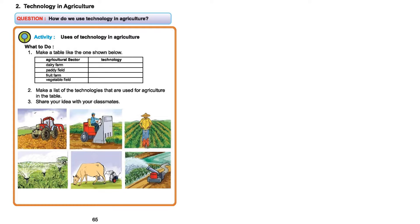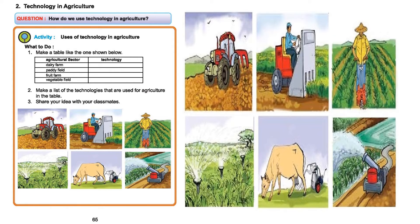Then we can see the milking machine, where the machine collects milk from the cow. It is quite easy, reduces time, and helps us very well. Then we can see the irrigation pump. Whenever we need water in the paddy field, we need a huge amount of water. With the help of this irrigation pump, we can supply a lot of water to the paddy field so that the paddy can grow well.